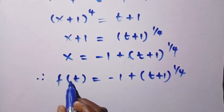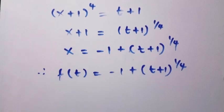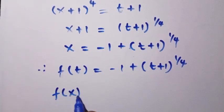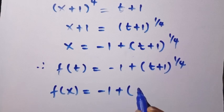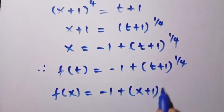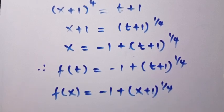By replacing t with x, we have f(x) = -1 + (x + 1)^(1/4). This is the result of this problem.